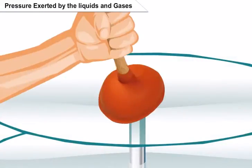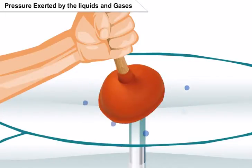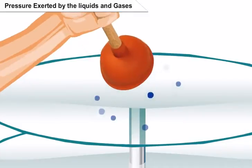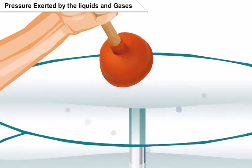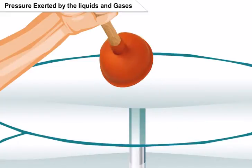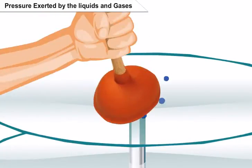When you press the rubber sucker against a flat surface, most of the air between its cup and surface escapes out. The sucker sticks to the surface because of the pressure of the atmosphere acting on it. To pull the sucker off the surface, the applied force should be large enough to overcome the atmospheric pressure.